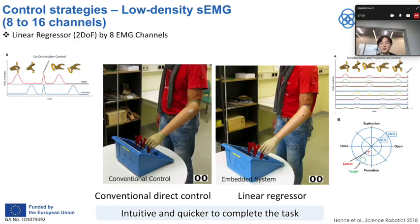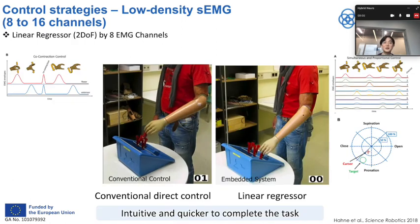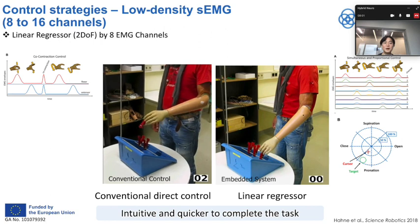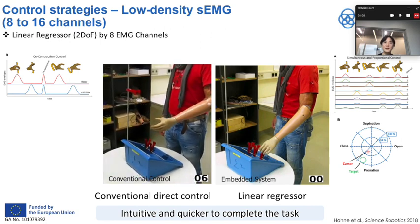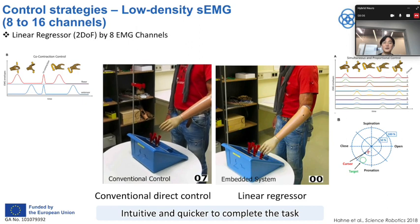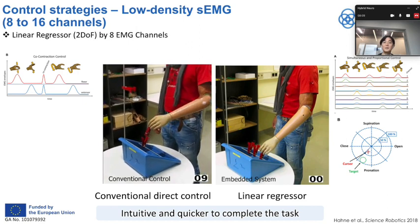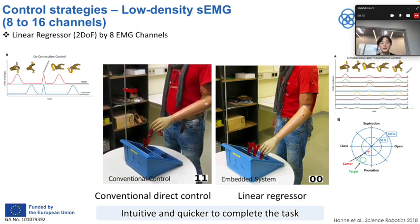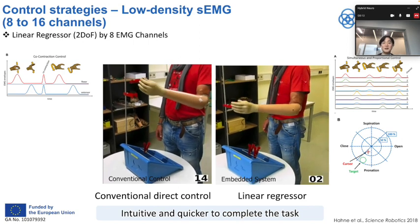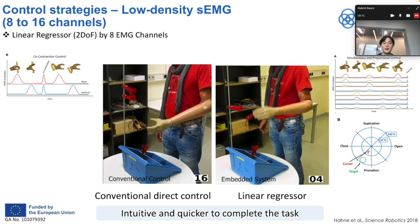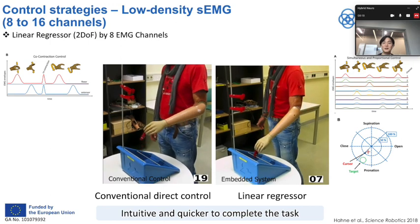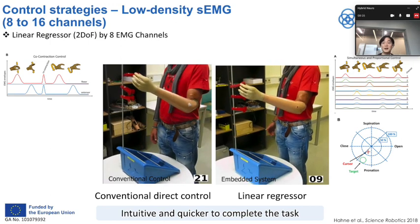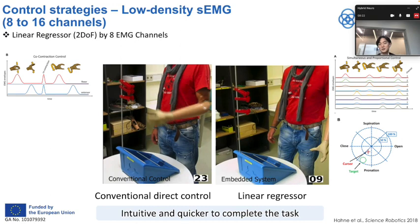This is a demonstration of linear regressor control using 8 channels of surface EMG. The left-hand side video shows a conventional method, which is direct control, and the right-hand side uses a linear regressor. As you can see, the linear regressor completes a task more quickly, representing how intuitive the control is.